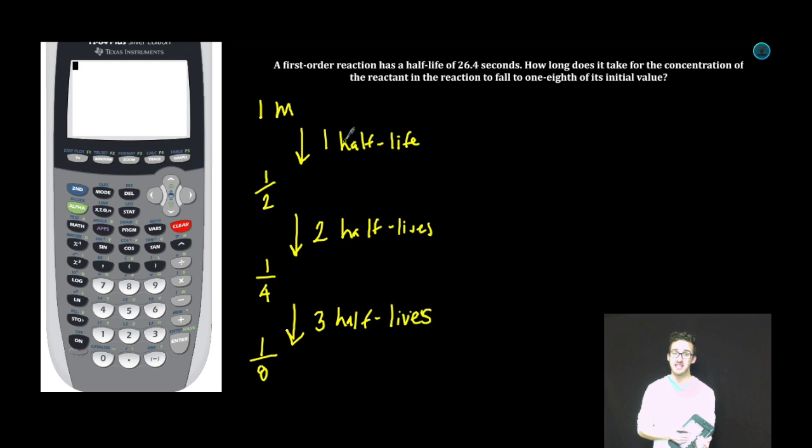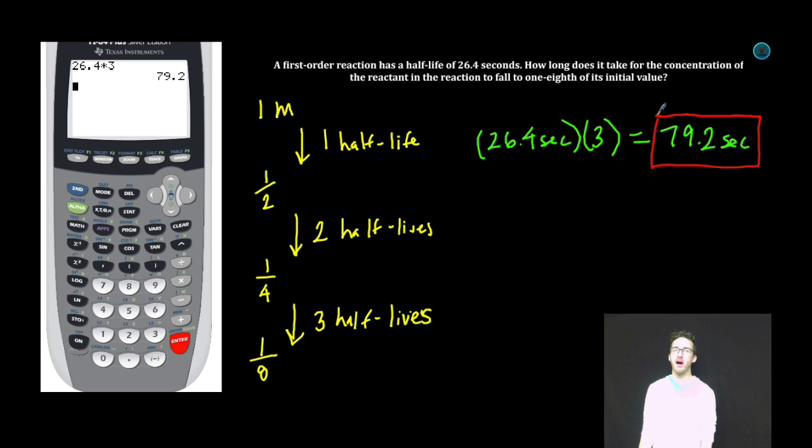But for this question, we've determined that it's gonna take three half-lives for the concentration of the reactant to fall to one-eighth of its initial value. And if each half-life is 26.4 seconds, and it takes three half-lives to fall to one-eighth of its initial value, 26.4 times three, it's gonna take 79.2 seconds for that to happen. Boom! And we are done!